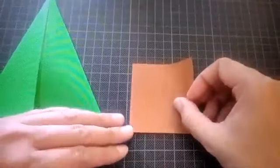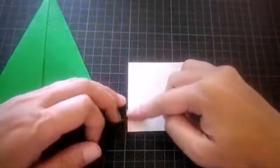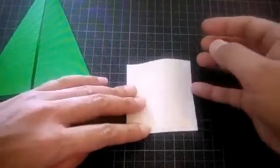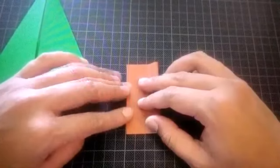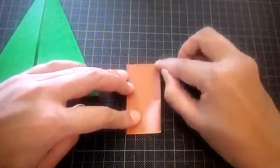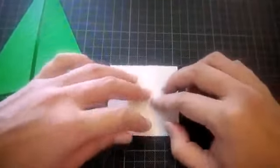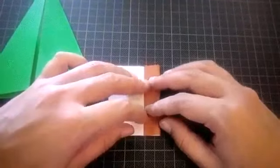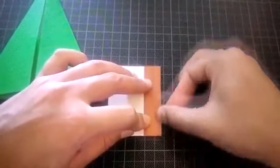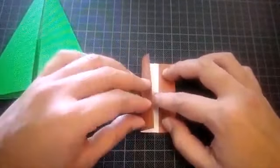Now take brown sheet and fold it half like this. Crease it properly.